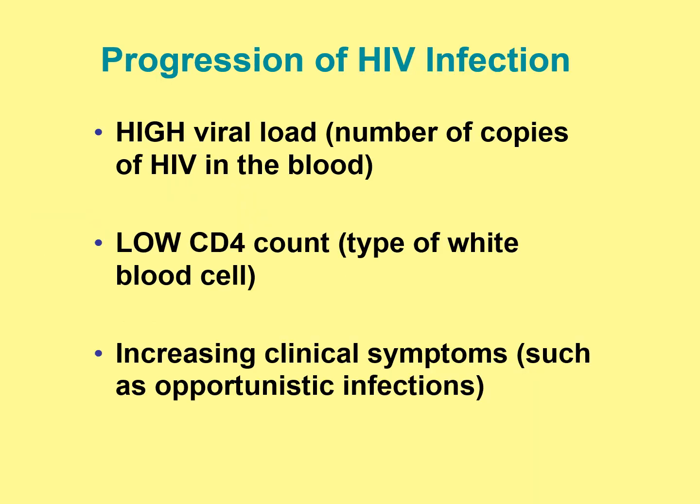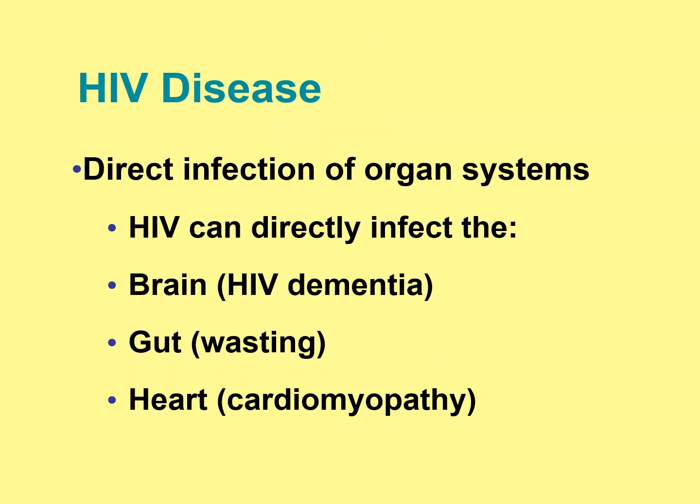A high viral load and a low CD4-plus count increase your clinical symptoms, such as pneumonia and other opportunistic infections, adding to the complications of HIV and AIDS. Direct infection of organ systems can also occur — usually found in the brain causing HIV dementia, and the gut shown by wasting.